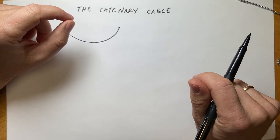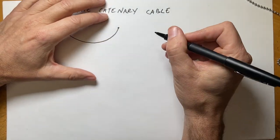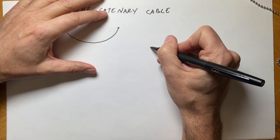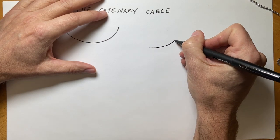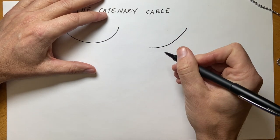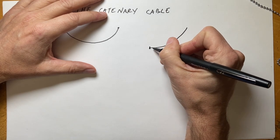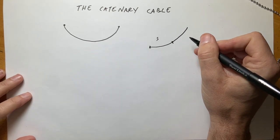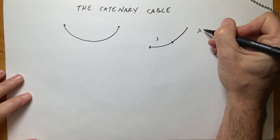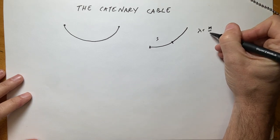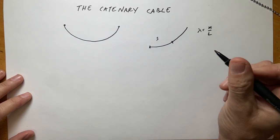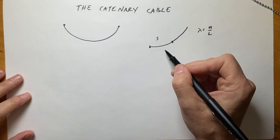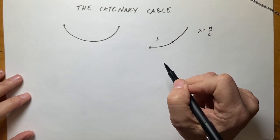This is a tough problem, and there are some tricks. I don't like the tricks, but we're going to do them anyway because there's really no option. Let's start off with this part of the cable. I'm taking a half, and I'm going to break this into a section of length s. This cable has a linear mass density of lambda — that's the mass per length. If that's the case, this section of the cable is in equilibrium.